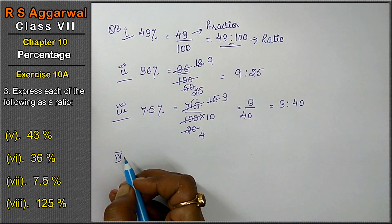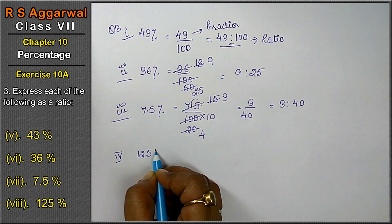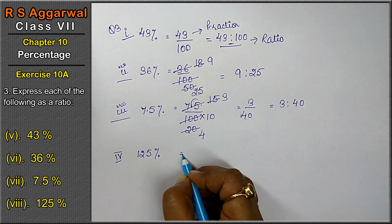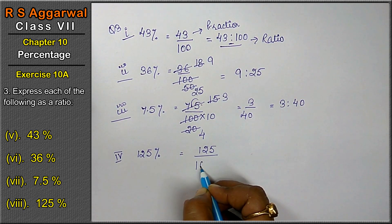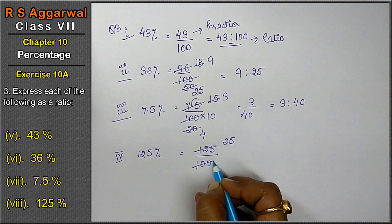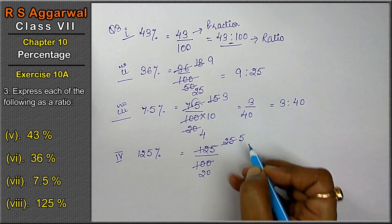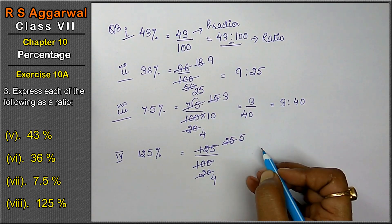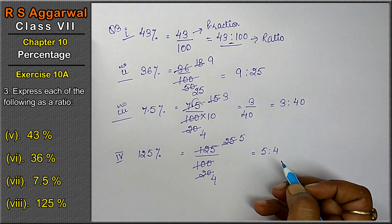Last part of this question is 125 percent. 125 percent is 125 upon 100. Now 5 2 is a 10. 5 5 is a 25. 5 2 is a 10 and 0. 5 5 is a 25. 5 4 is a 20. Now the ratio is 5 is to 4.